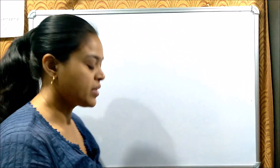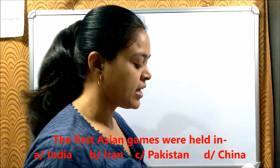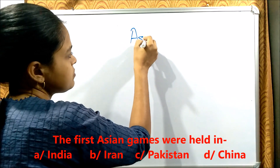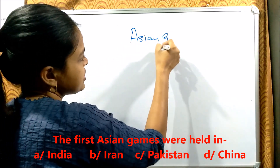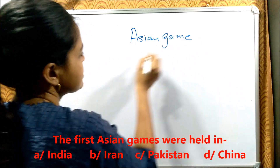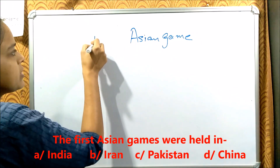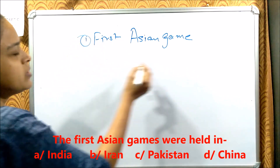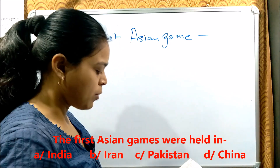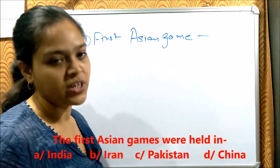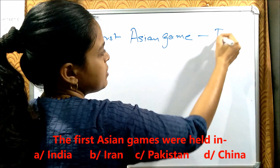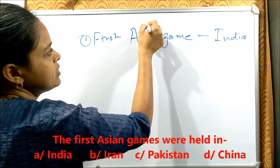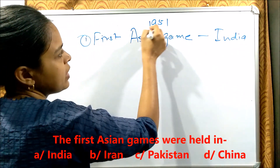The first question: The first Asian Games was held in which country? The options are India, Iran, Pakistan, and China. Option number 1 — it was held in India, in 1951.